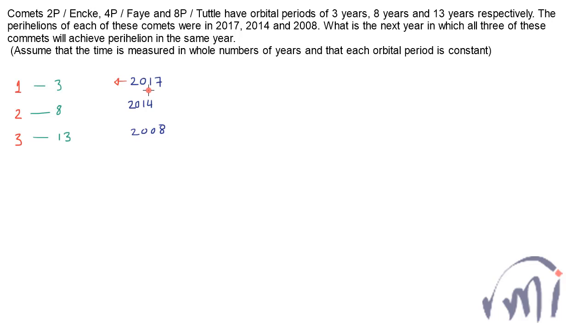This one had last perihelion in 2017 and the orbital period is 3 years. So before 2017, it had perihelion in the year 2014. So these two comets together had their perihelion in 2014. The orbital period of this is 3 years and the second one is 8 years, that means every 8 multiplied by 3, 24 years, they are having their perihelion together.